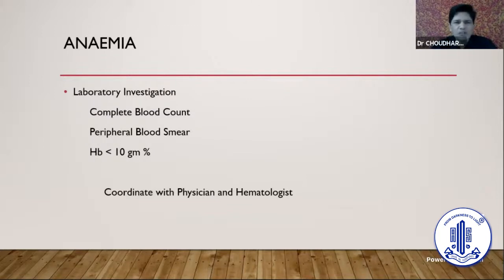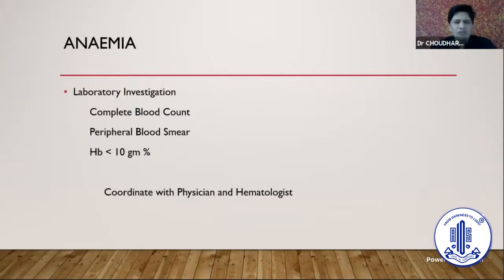Anemia is quite common in our country but we often don't look for it. When you suspect a clinically pale-looking patient, check the conjunctiva and order laboratory investigations. Two forms of investigation are important: complete blood count to check hemoglobin level, and peripheral blood smear to see the type and etiology of anemia. Any hemoglobin less than 10 gram percent is not desirable — it alters hemodynamics and favors increase of DME. You can supplement iron yourself, but it's always better to coordinate with a physician or hematologist.